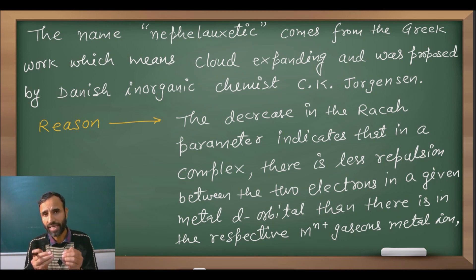How does this cloud expand? Because metal has a d orbital. Now when it forms a bond with the ligand, two atomic orbitals combine to form a large molecular orbital, and therefore those two electrons are delocalized in the more wider region.